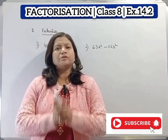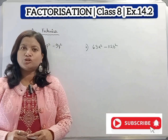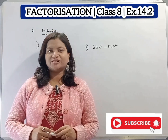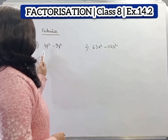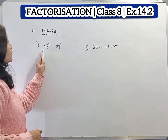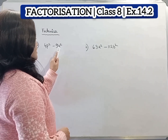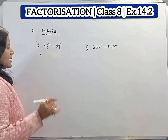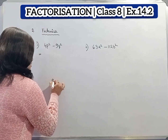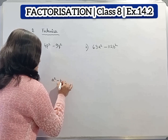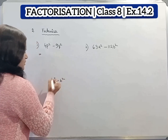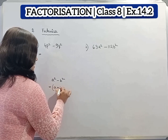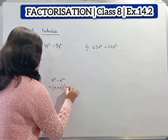Hello students, welcome to GANPIC. Today I will show you question number 2 from exercise 14.2, chapter name is Factorization. So first question: 4p square minus 9q square. Here we apply the identity a square minus b square, and we know that a square minus b square equals a plus b into a minus b.